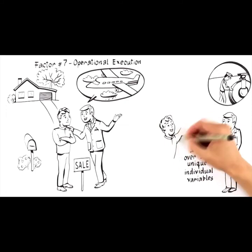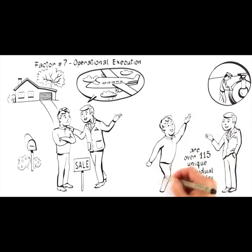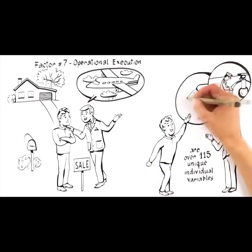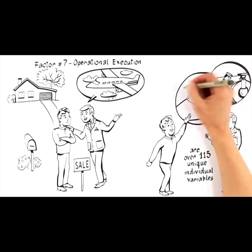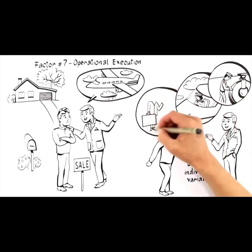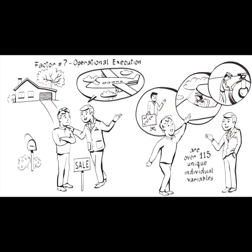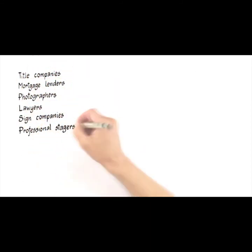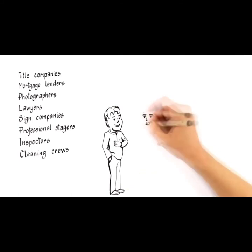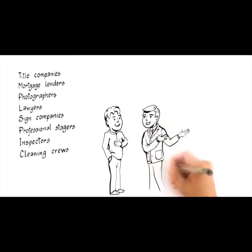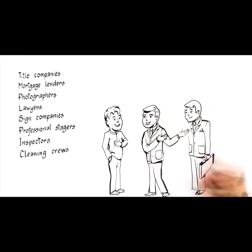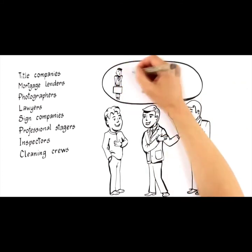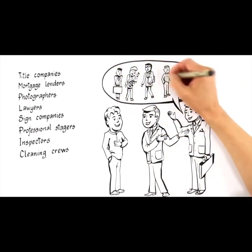And because there are over 115 unique individual variables that go into the successful sale of every home, you don't want an agent who doesn't have systems and relationships in place to manage the process. Like a safe flight, it takes many people working together to get your home sold for top dollar. When hiring an expert, ask about their relationships with title companies, mortgage lenders, photographers, lawyers, sign companies, professional stagers, inspectors, and cleaning crews. The expert will be prepared to explain how they work together to get your home sold.